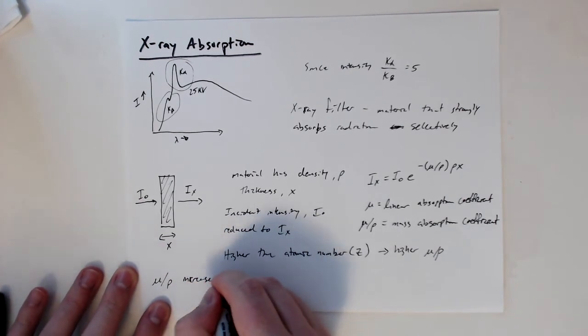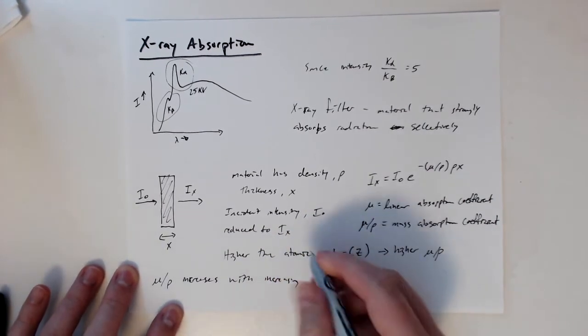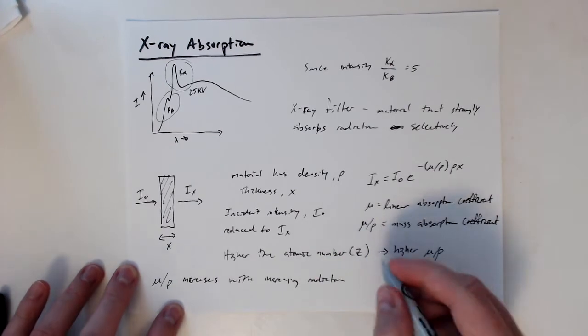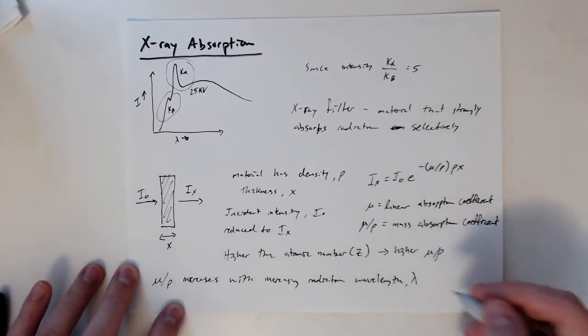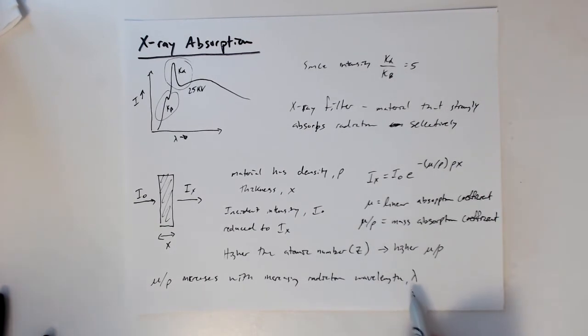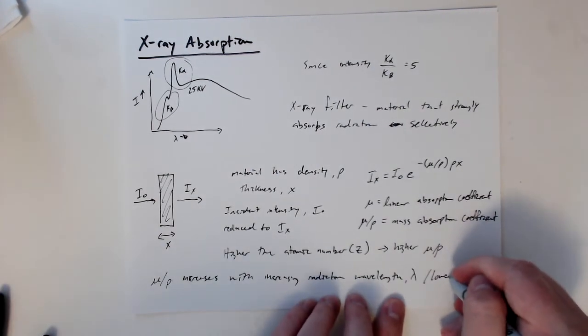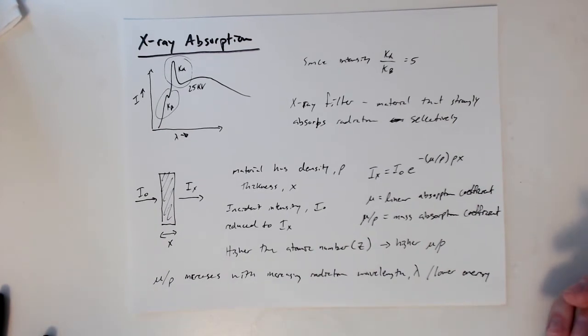This mass absorption coefficient increases with increasing radiation wavelength λ. If we think about higher wavelengths, that translates to lower energy. Let me switch over to the slides and show you a graph of this mass absorption coefficient.